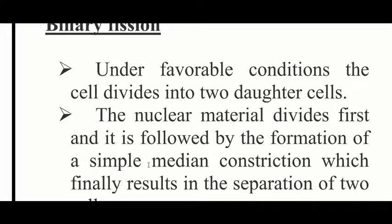This fission occurs in a rapid process and is regularly repeated every 20 to 30 minutes. During this, the chromosome duplicates and the cell elongates initially.